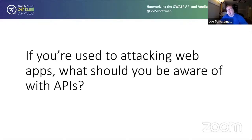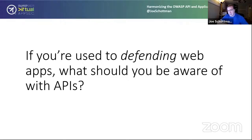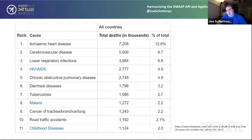If you're used to testing web applications, what do you have to think about differently when you start testing APIs? A lot of this talk started as a checklist I developed internally for API testing versus application testing. Most of the time it just differs in the presentation layer, but there are a few vulnerabilities more common in APIs. I'm also a big proponent of the purple team concept — simply testing doesn't make a company more secure; you have to work with developers and give them guidelines on how to make things better.